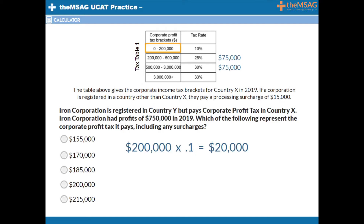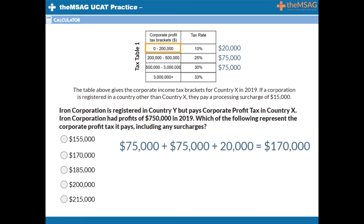So, another $20,000 of tax. Adding these up gives $75,000 plus $75,000 plus $20,000, which equals a total of $170,000 of corporate profit tax. This matches answer choice B, so it must be right, right? Wrong.